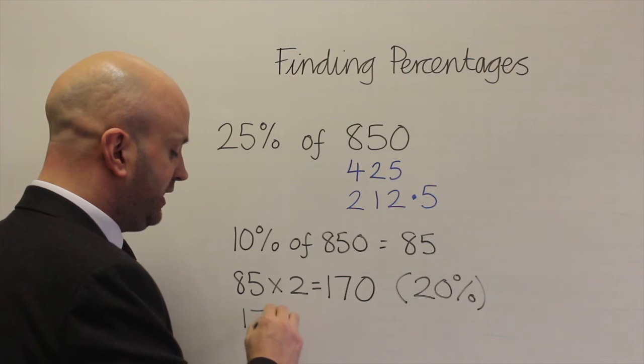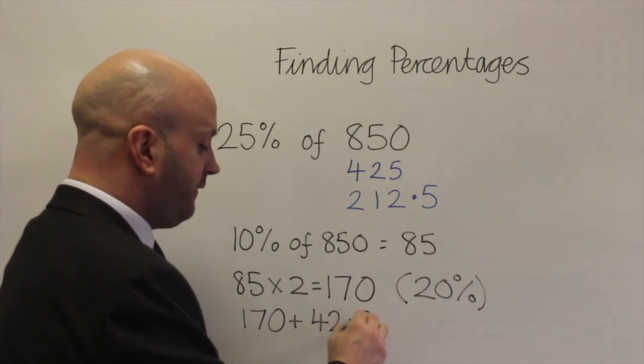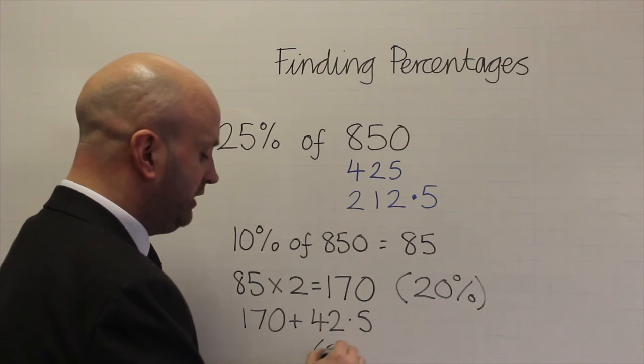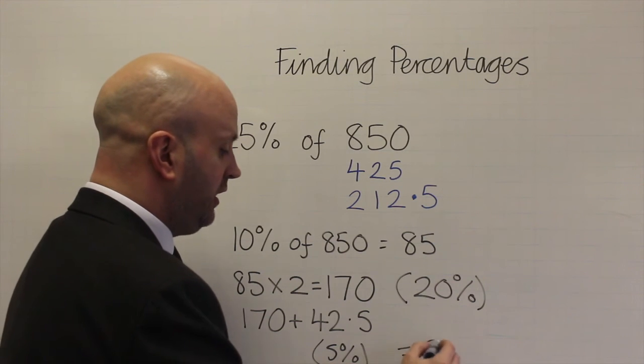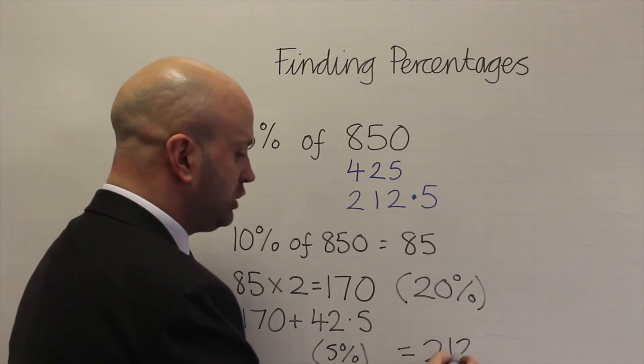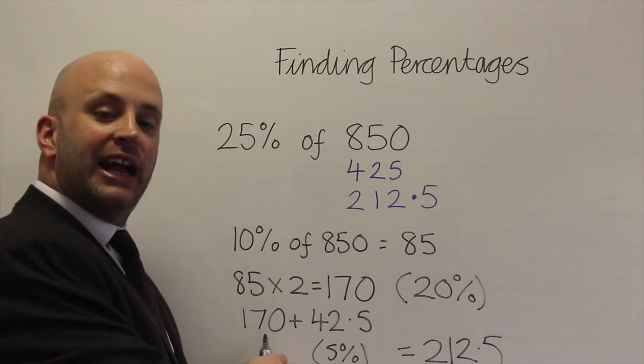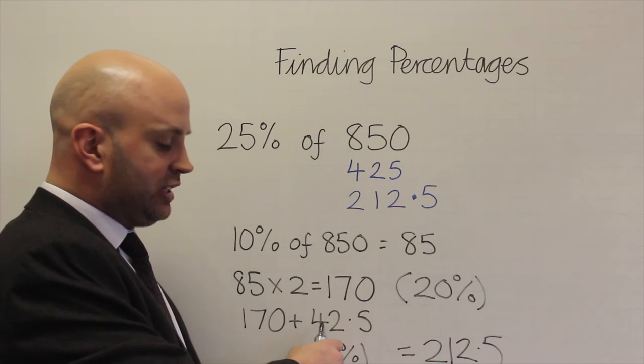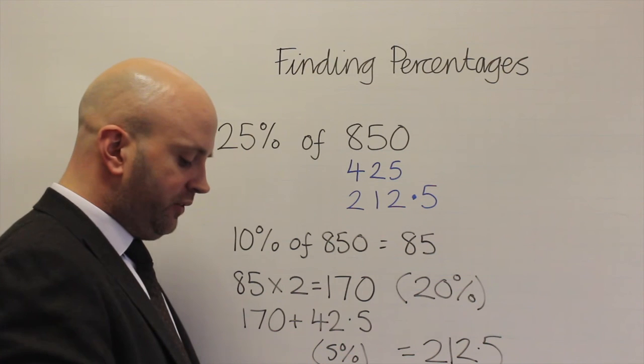So I am going to put that in, 170 which is my 20%, add 42.5. That 42.5 is my 5% and that will give me an answer of 212.5. I did that by adding on 30 to get to 200 and then I have the 12.5 left over to get 212.5.